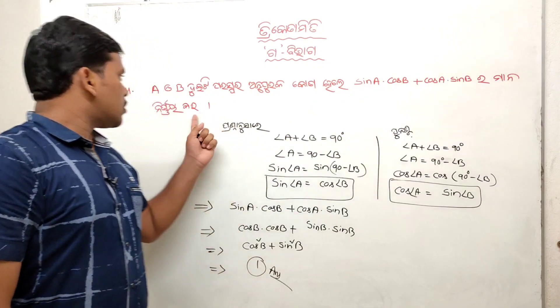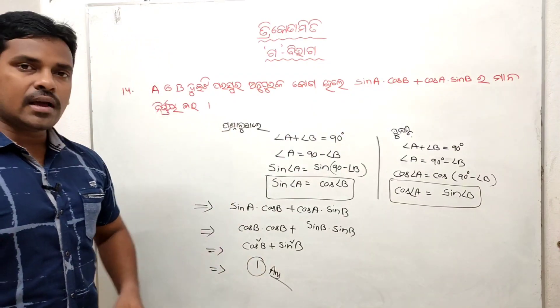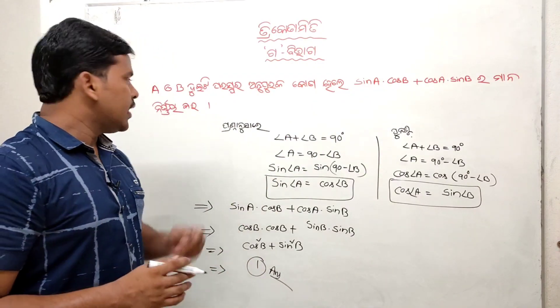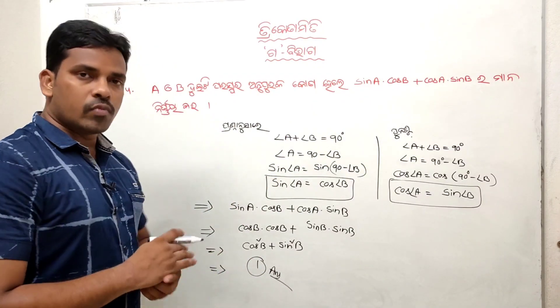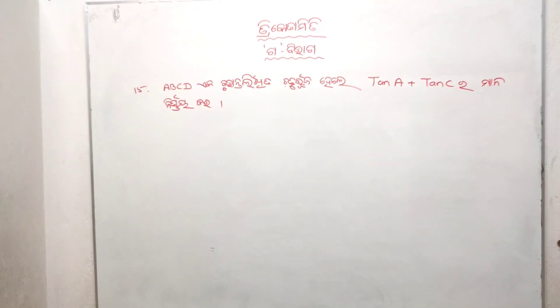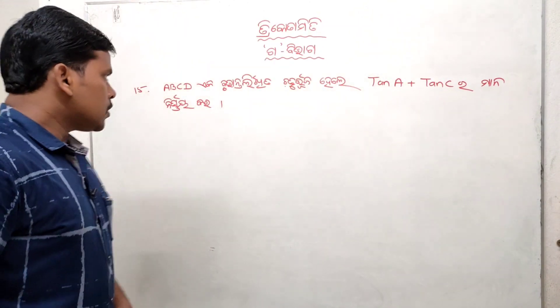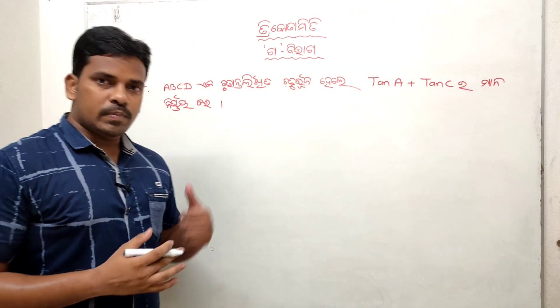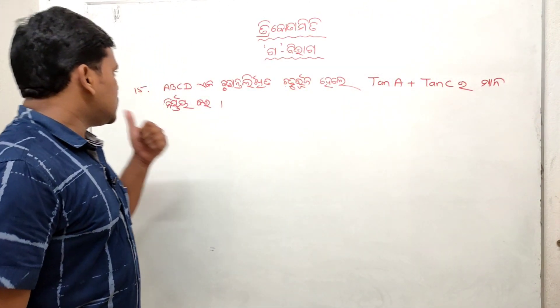We know sin squared theta plus cos squared theta equals 1, so the answer is 1. LHS equals RHS, so problem number 14 is complete. Now let's move to problem number 15.